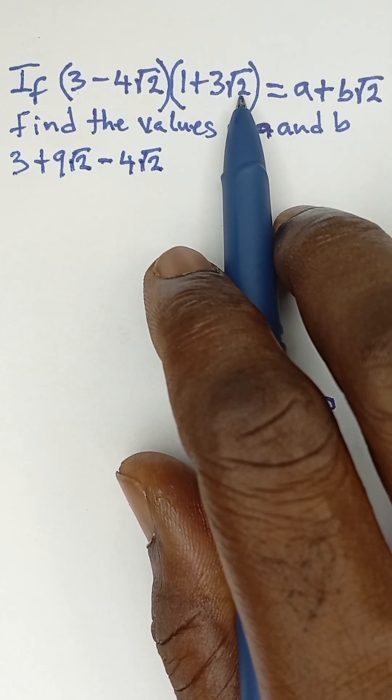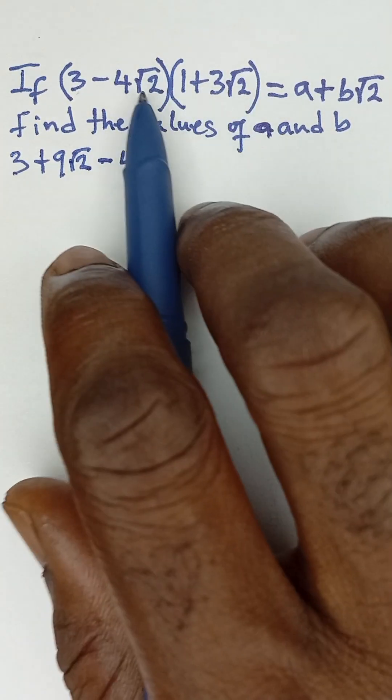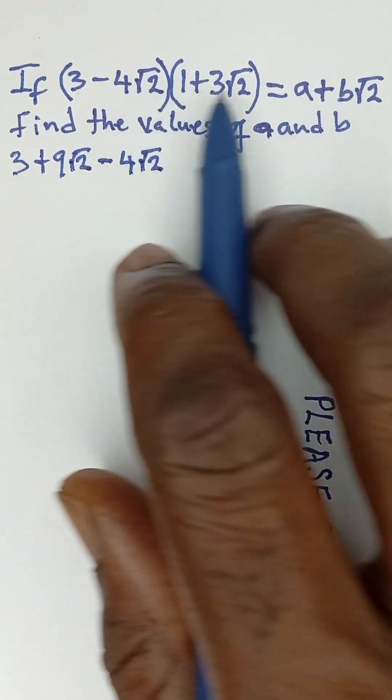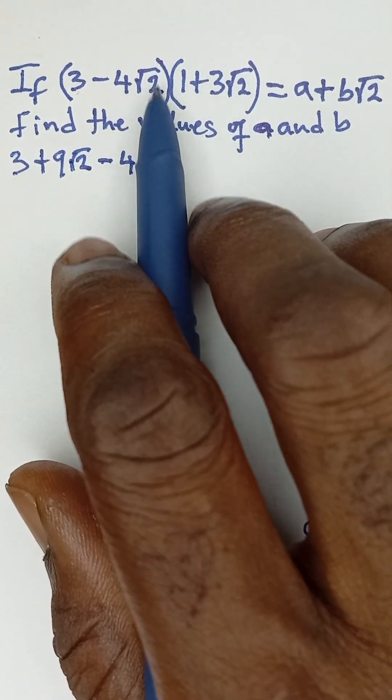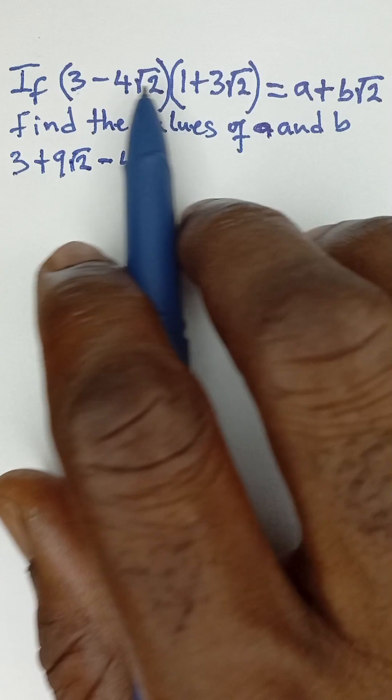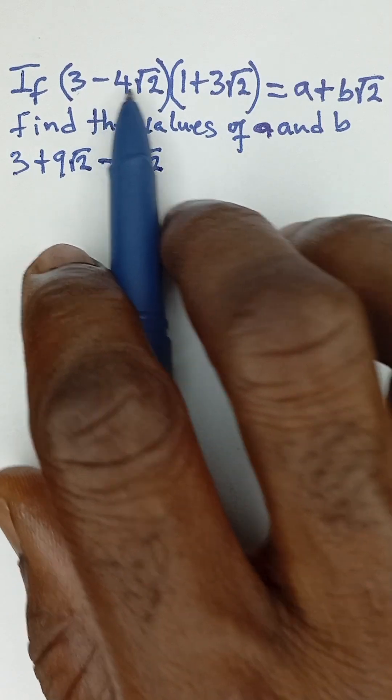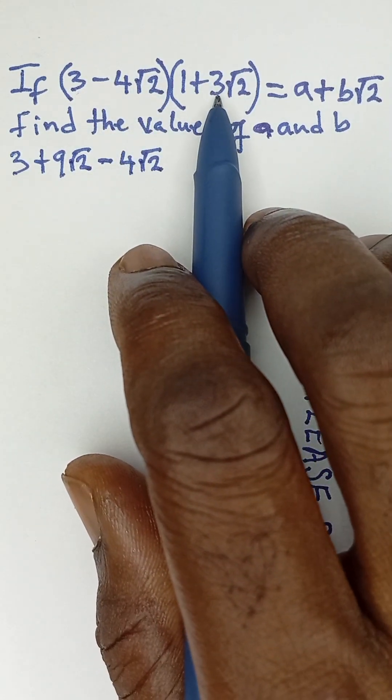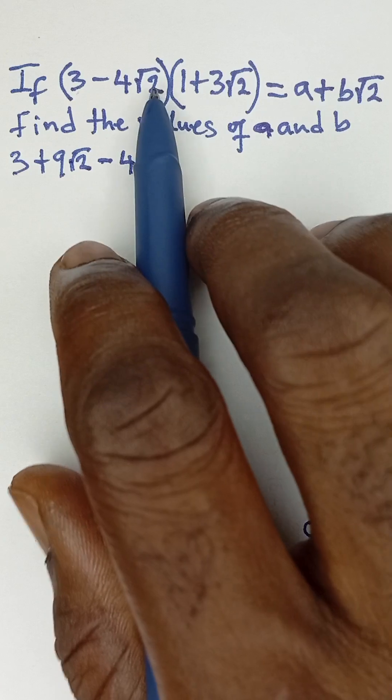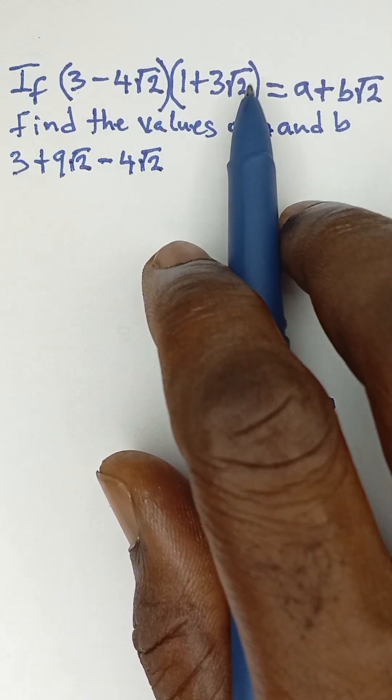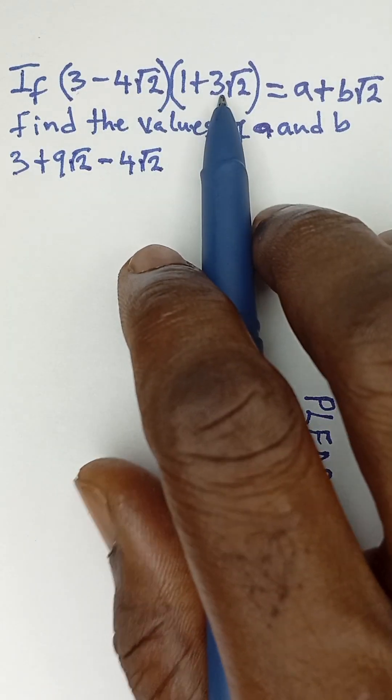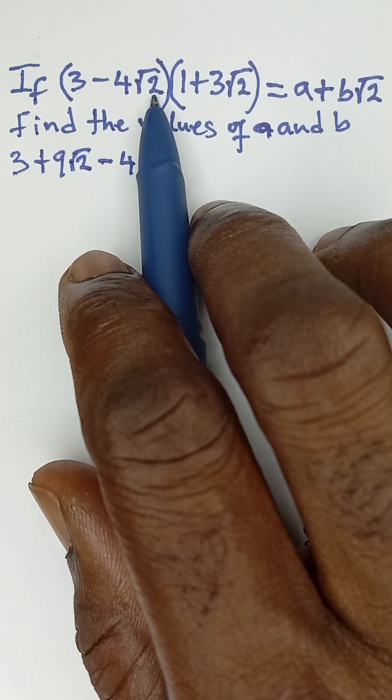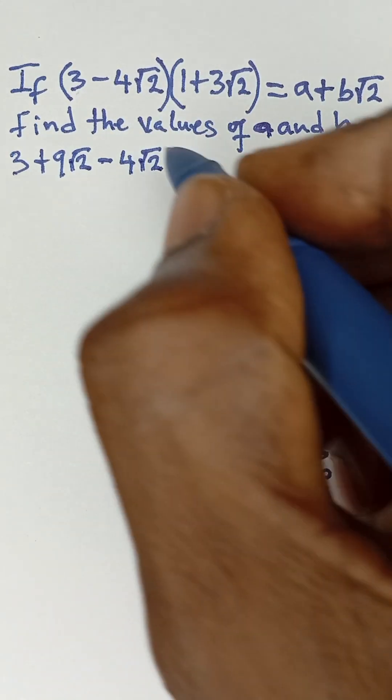So if you see the same values in root signs multiplying each other, just simply take the number inside the root sign. So -4 multiplied by 3 is -12, then √2 multiplied by √2 is 2, so the -12 multiplied by 2 will give us -24.